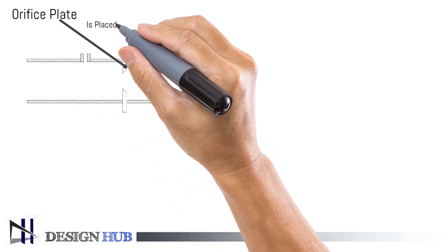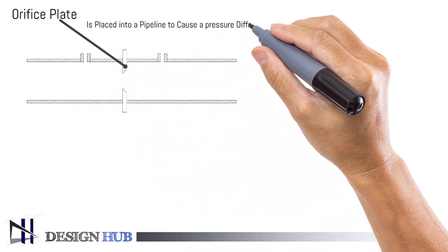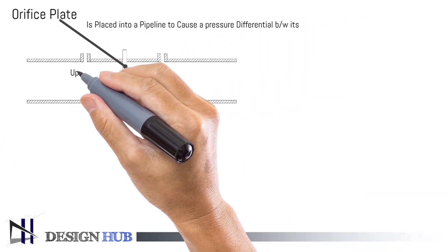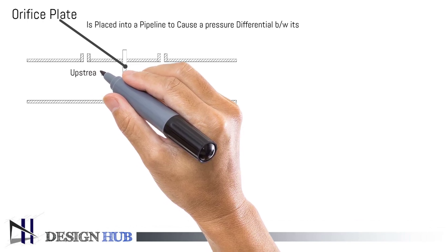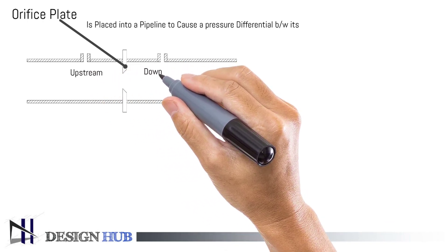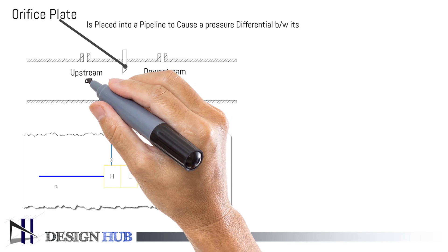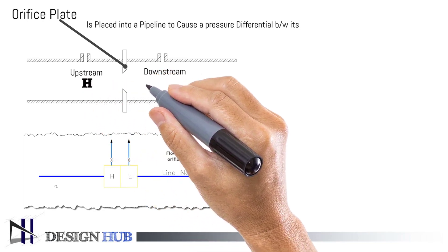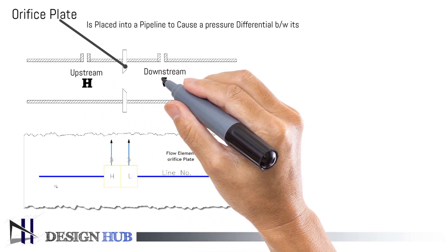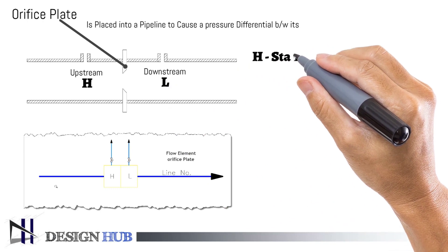As we know, the orifice plate is placed into a pipeline to cause a pressure difference between upstream and downstream. In instrument loop diagrams, upstream is denoted by H and downstream is denoted by L.